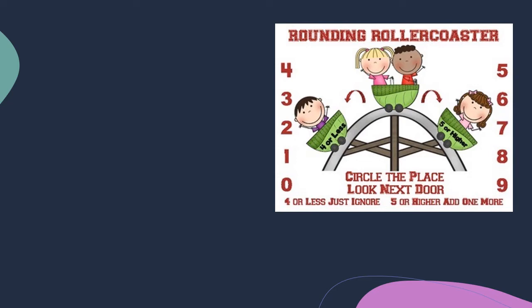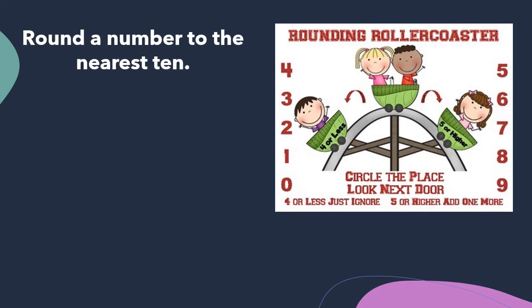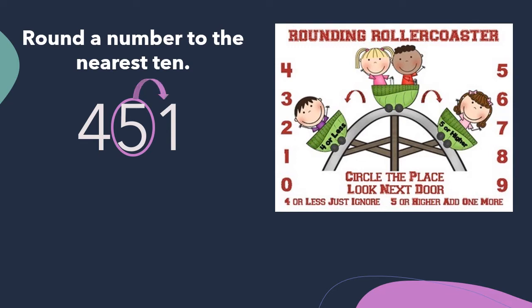So what does this mean? Well let's say we're given the direction to round a number to the nearest ten. Let's take the number 451. The poem tells us to circle the place — that's the place we're rounding to. In this case we're rounding to the tens, so we're going to circle the five, the digit in the tens place. Circle the place, look next door. When we look next door we're looking at the digit to the right. The digit to the right is a one, and that is four or less. So circle the place, look next door, four or less, just ignore.